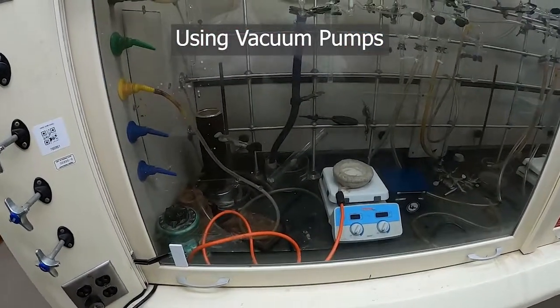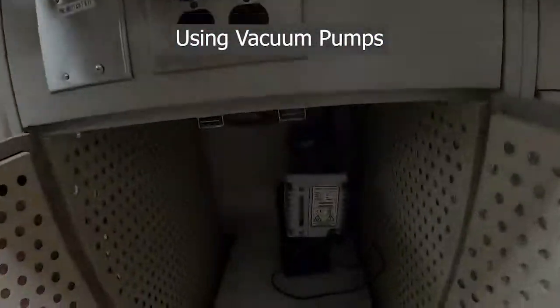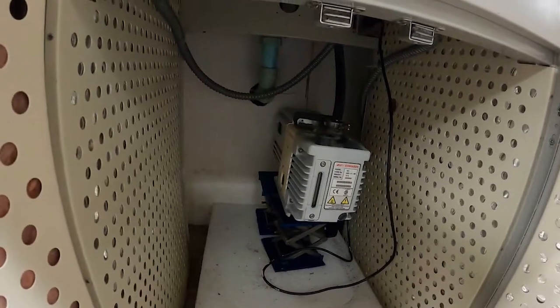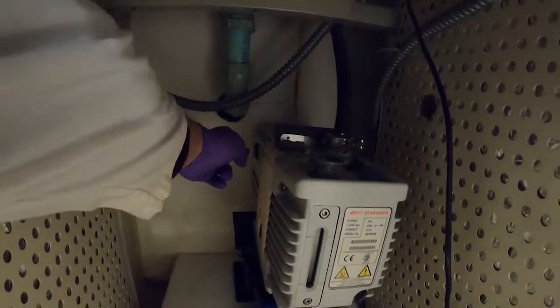The vacuum pump for this hood is located here underneath in this cabinet. And the switch to turn it on is here on the side.